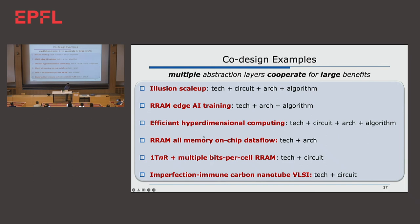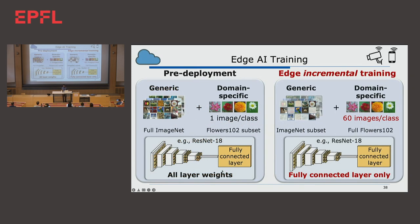Let me show you some examples of co-design. What is co-design? The idea is that multiple abstraction layers cooperate for very large benefits. I will take our Chimera example and specifically focus on edge AI training, because this is an edge AI workshop. When we started designing the Chimera chip, I told the students we have to show edge AI training — nobody has shown edge AI training on these non-volatile systems. Everybody said: are you crazy? You could never do edge AI training on such systems because resistive RAM write characteristics are terrible — it takes an enormously long time to write, write energy is extremely bad, and write endurance means the chip will be gone in a month.